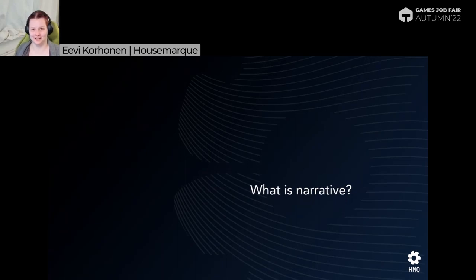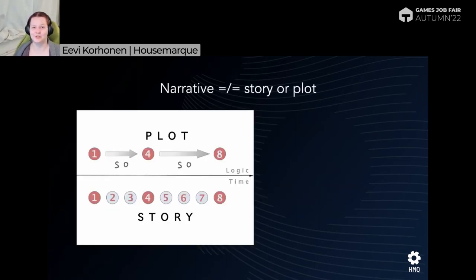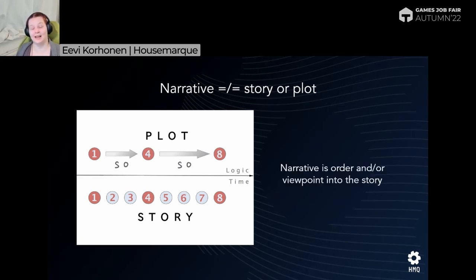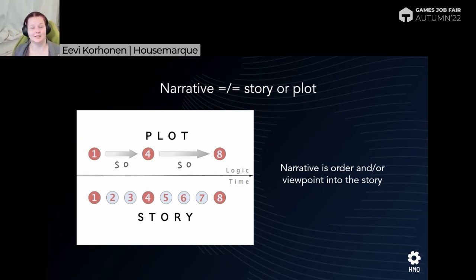First, I want to address what narrative is, because I see a lot of people mixing this up with story or plot. Plot is usually a smaller set of events in the larger story — an objective set of events that take place. But narrative is the viewpoint and/or the order into that story. Using Final Fantasy VII as an example, it's told from Cloud's viewpoint, but we could also tell it from Sephiroth's viewpoint, or in a different order. Flashbacks are a type of taking a piece of story and putting it out of chronological order. That is what narrative is about — how do we tell that particular story.